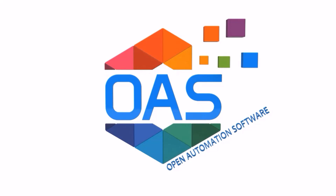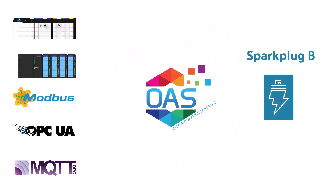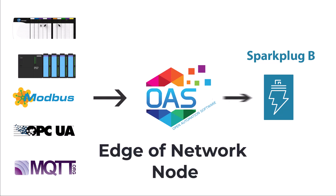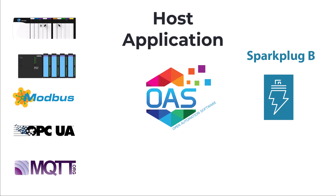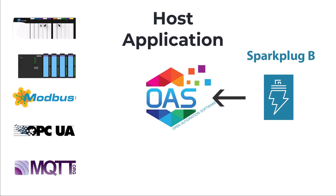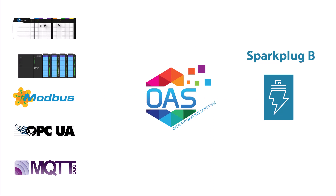In this video presentation we're going to see how Open Automation Software can be used to interface with Spark Plug B to transmit data to an MQTT broker from Industry 4.0 data sources like Allen Bradley, Siemens, Modbus, OPC UA, OPC DA, and MQTT as an edge of network node. We'll also see how Open Automation Software can be used as a host application to control edge of network nodes, receive data from them, and transfer it back to the Industry 4.0 data sources and consume it in applications like data logging, Excel trending, alarming, and visualization.